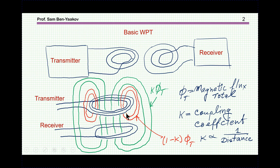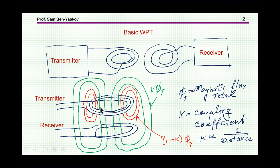In order to quantify this, we have the coupling coefficient k, such that k times the total flux is the flux common to both transmitter and receiver, while (1 minus k) times the total flux is the part not common — the stray flux around the transmitter itself.